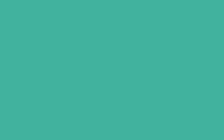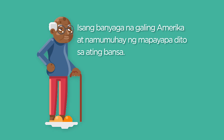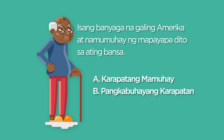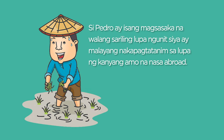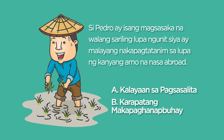Ang unang larawan ay si Paul. Si Paul ay isang banyaga na galing Amerika at namumuhay ng mapayapa dito sa ating bansa. Anong karapatan ang kanyang tinatamasa? A. Karapatang mamuhay? o B. Pangkabuhayang karapatan? Ang pangalawang larawan ay si Pedro. Si Pedro ay isang magsasaka na walang sariling lupa, ngunit siya ay malayang nakapagtatanim sa lupa ng kanyang amo na nasa abroad. Anong karapatan ang kanyang tinatamasa? A. Kalayaan sa pagsasalita? o B. Karapatang makapaghanap buhay?